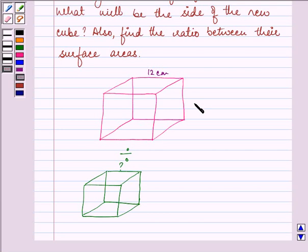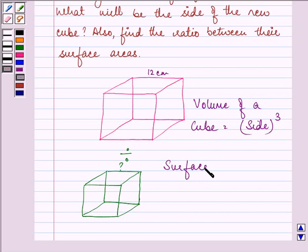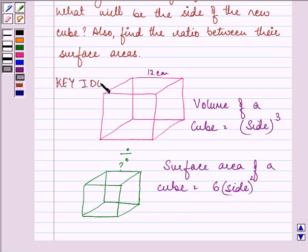Before proceeding on, let us be well versed with the volume of a cube's formula, that is side cubed, and surface area of a cube is equal to 6 side squared. So these are some key ideas for this question.